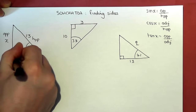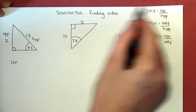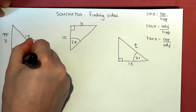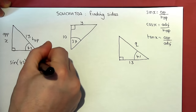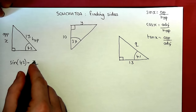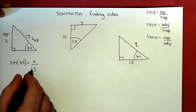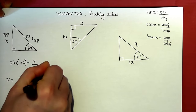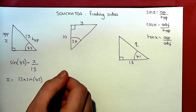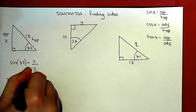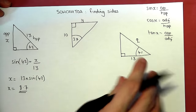So sine of the angle — in this case 42 — is equal to the opposite, which is x, over the hypotenuse, which is 13. To find x, I rearrange this equation by multiplying by 13. So x equals 13 times sine 42. I input that into my calculator: 13 times sine of 42, and I get 8.7. So x has a length of 8.7.